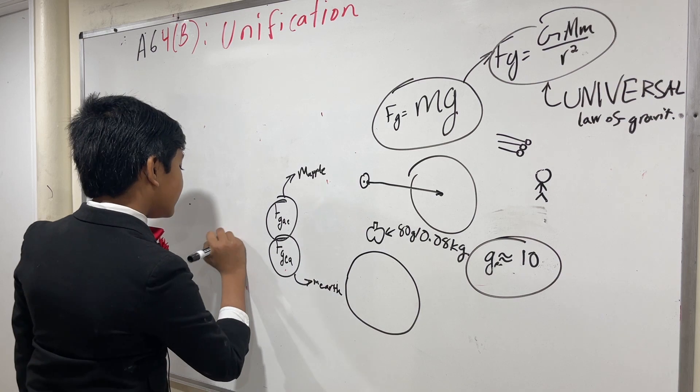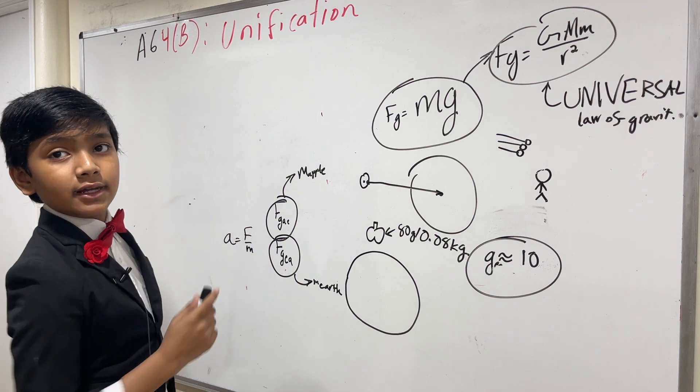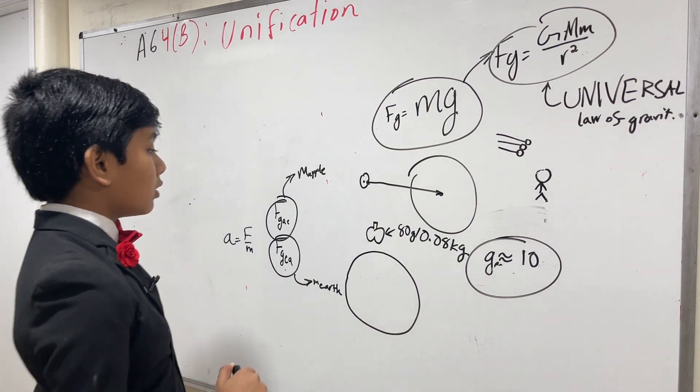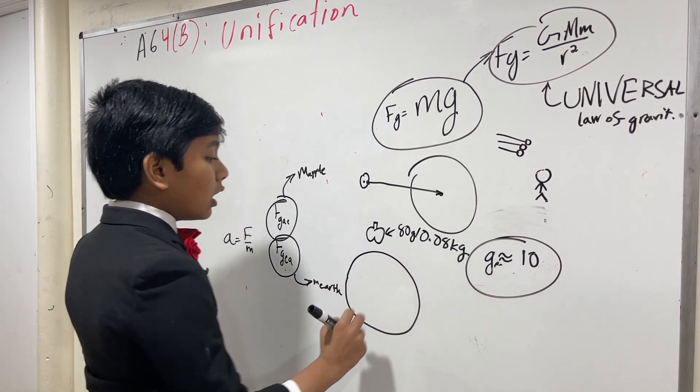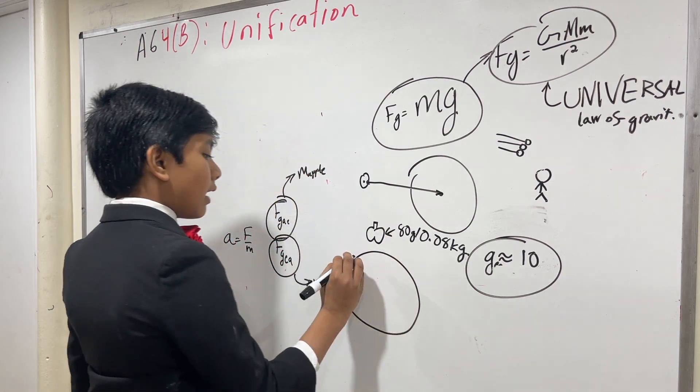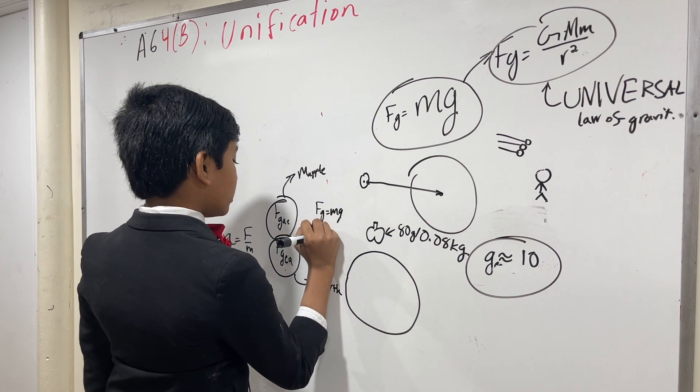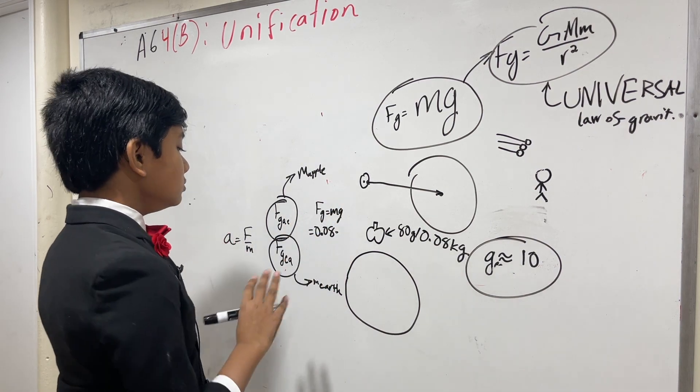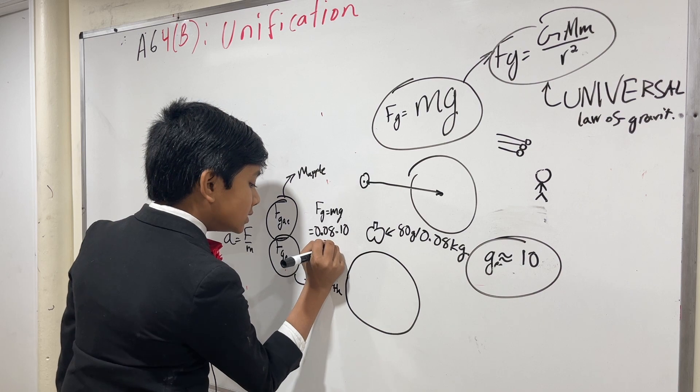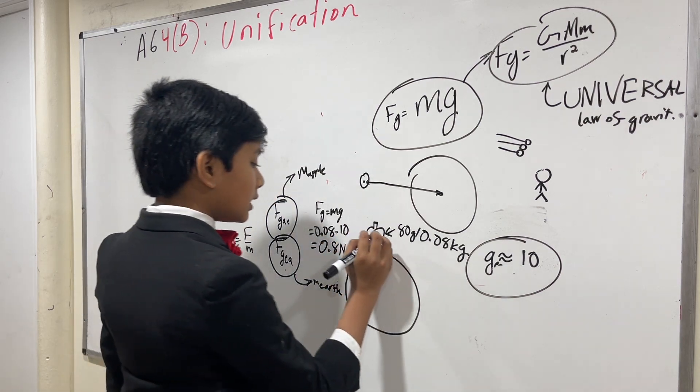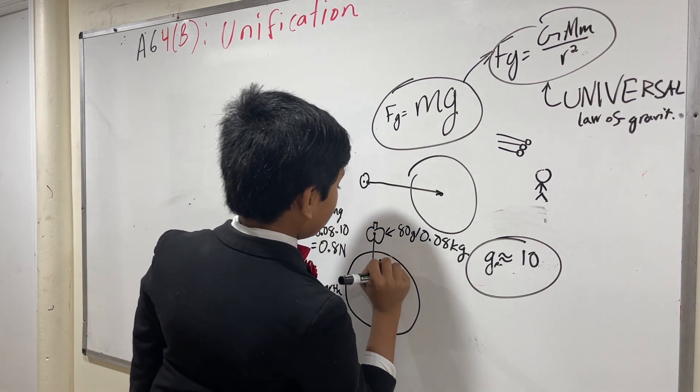And since acceleration is f over m, that means that the acceleration of the apple is much bigger than the acceleration of the earth. Alright, enough blibber blabber. What is the force of the apple on the earth? Well, to find that, we have to find the force of the earth on the apple. Which would be, well, Fg is mg. So that's 0.08 kilograms times our g is approximately 10. So that gives us 0.8 newtons.